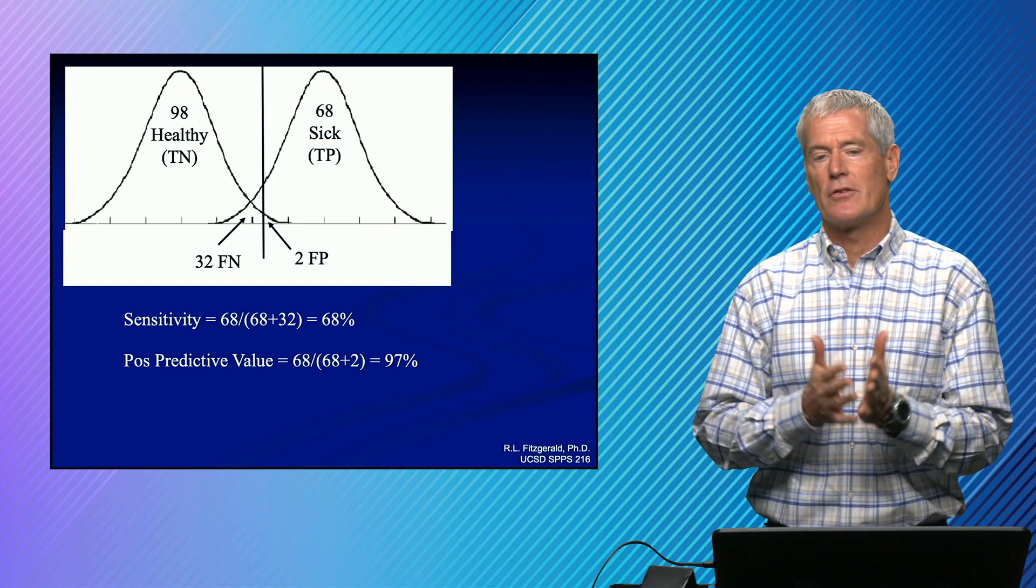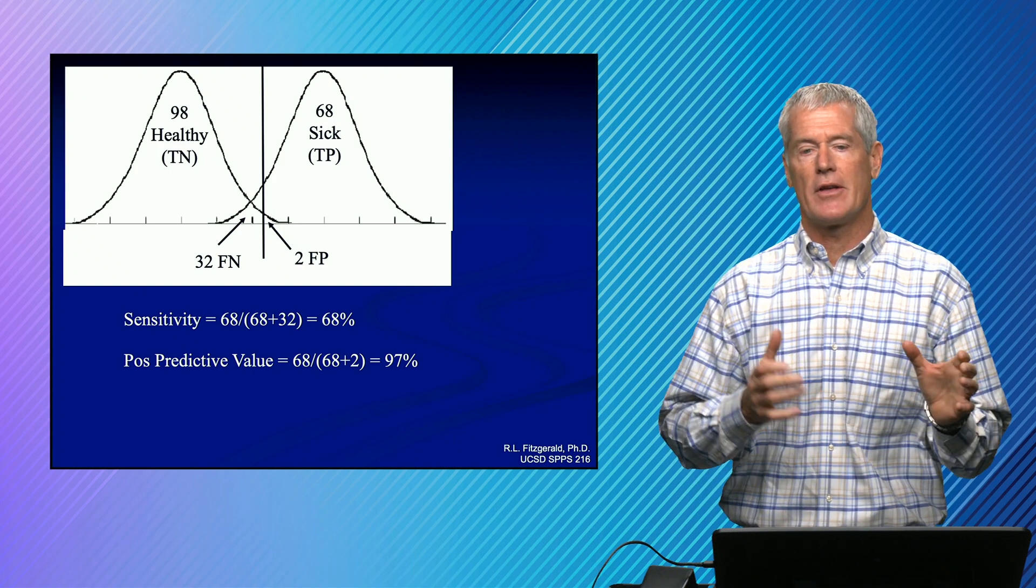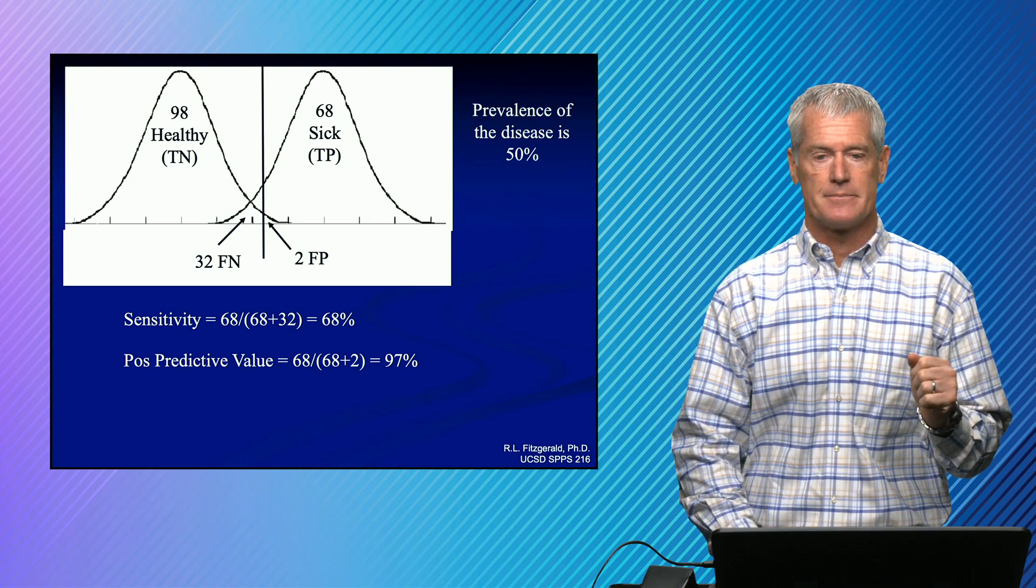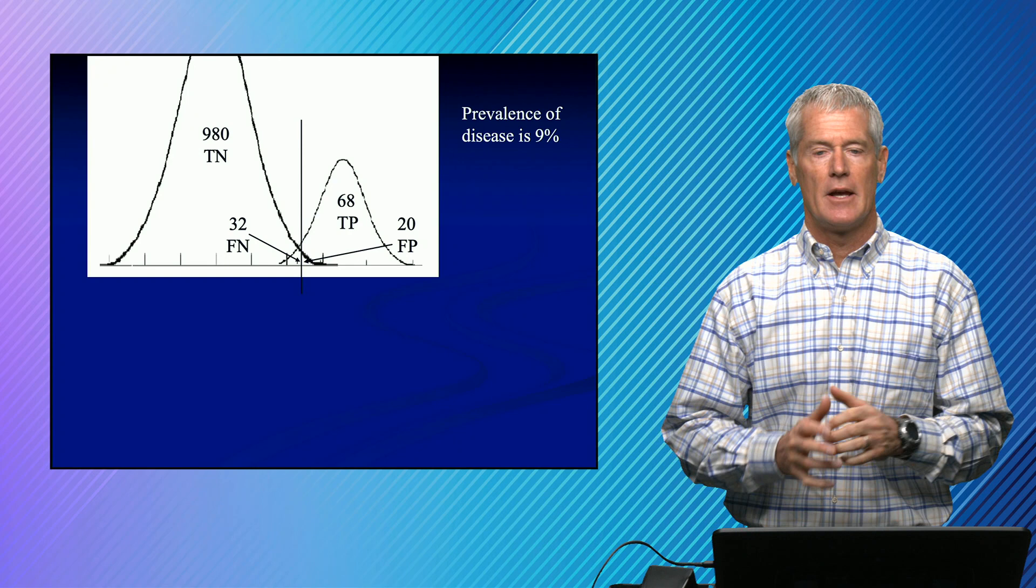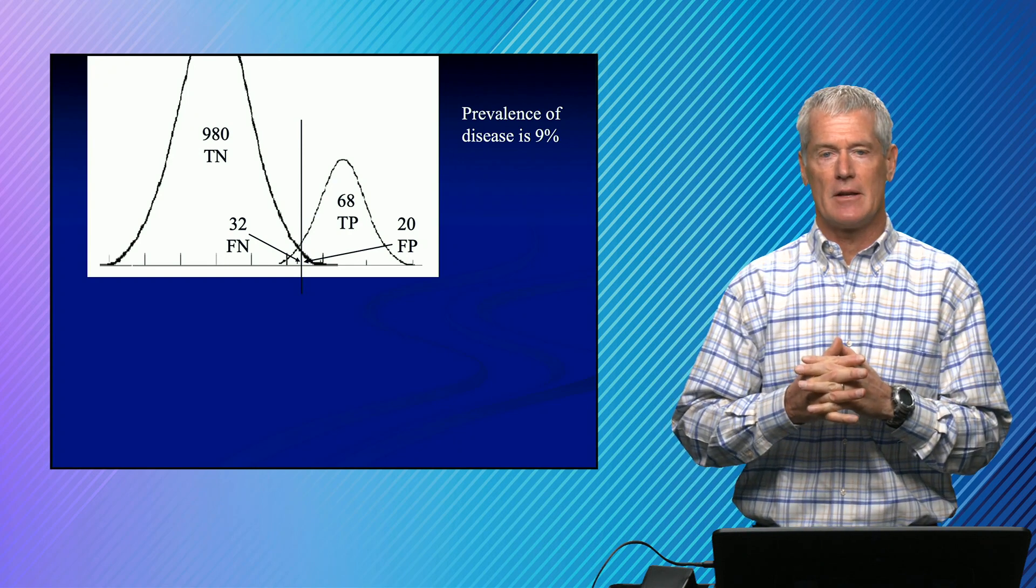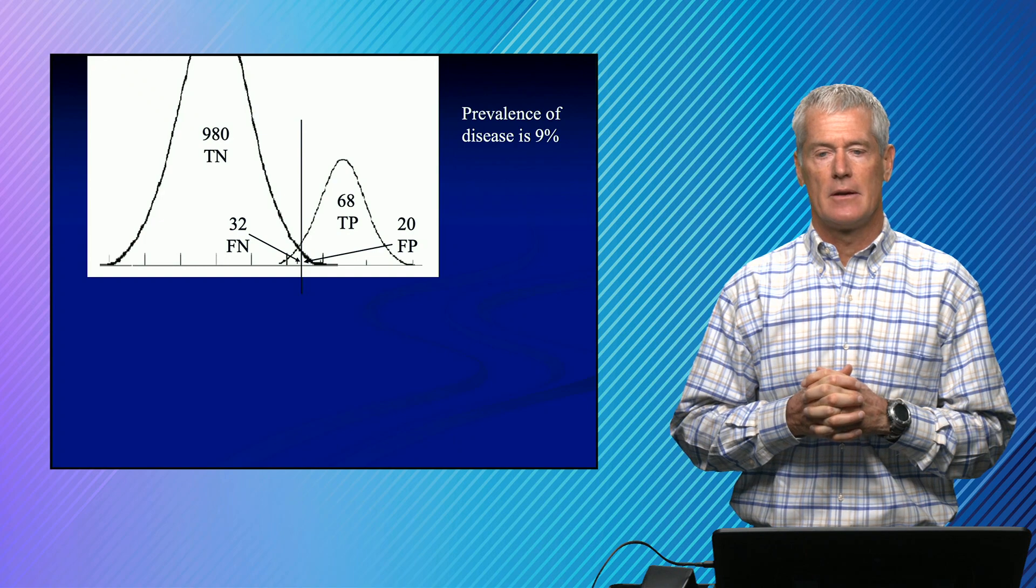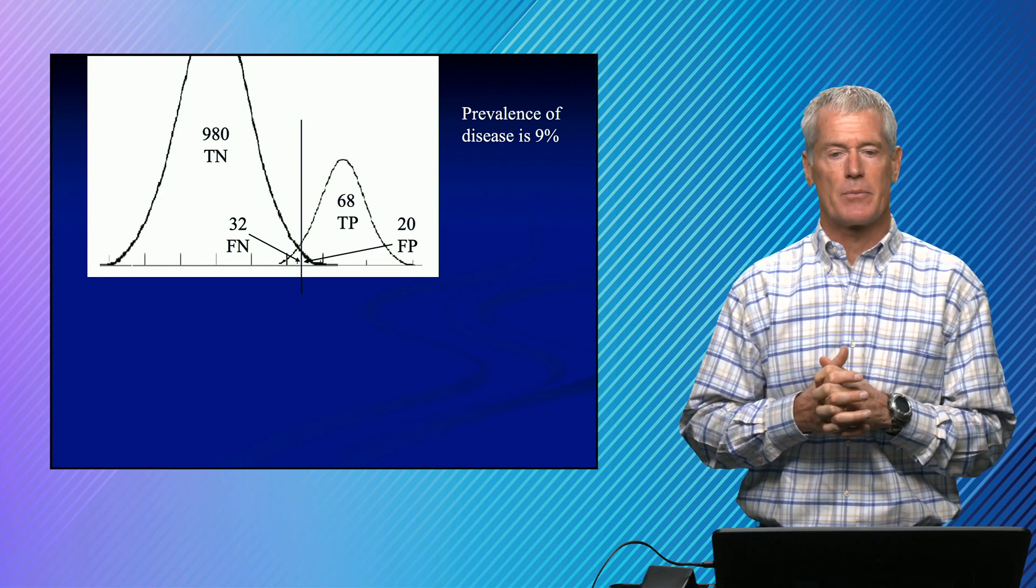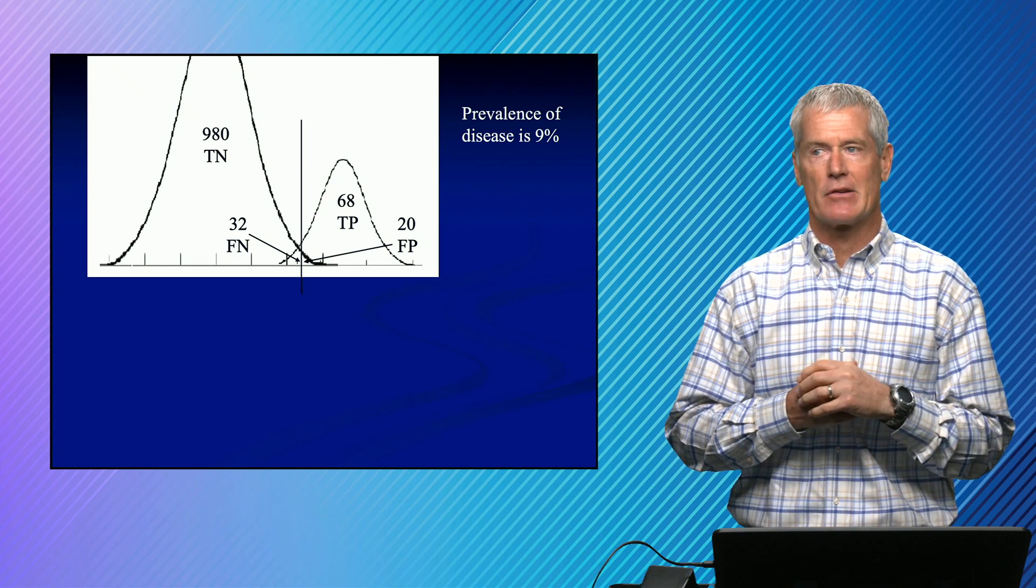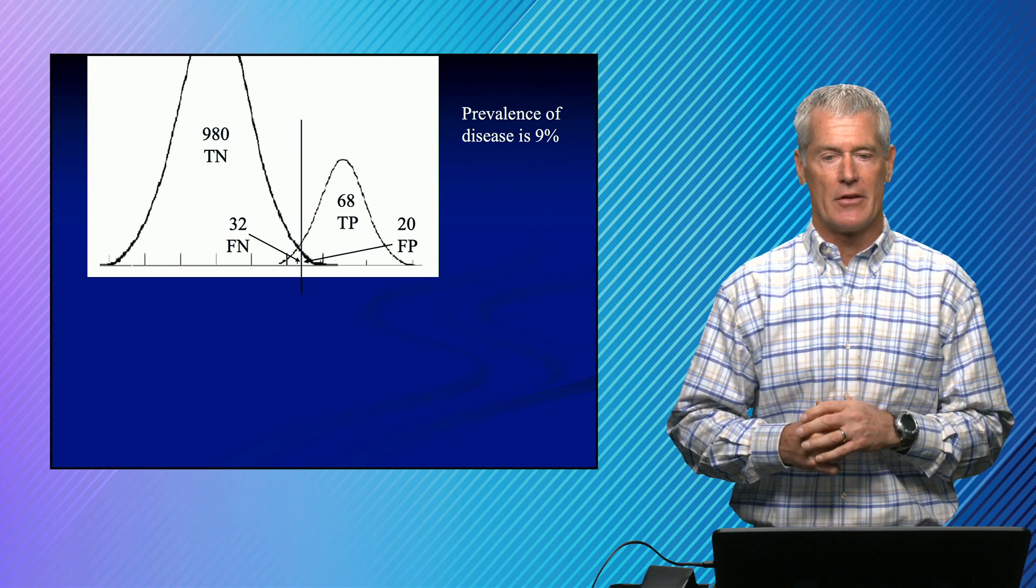So what happens is it's unusual that we would have a healthy and a diseased population where the prevalence is 50 percent. So let's look at exact same tests. So we're using the same tests, the same sensitivity, the same specificity, but we've now changed the disease prevalence. So we've essentially multiplied the healthy population by a factor of 10. So our prevalence is now 9 percent.